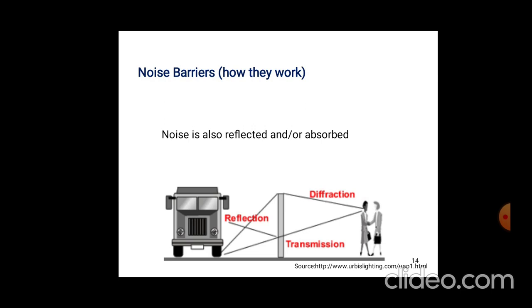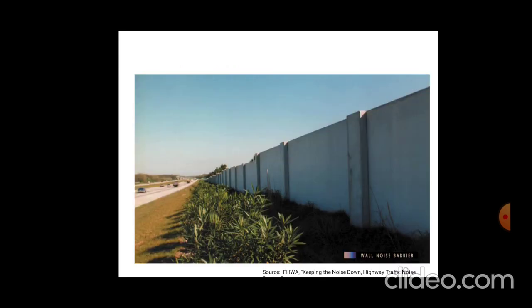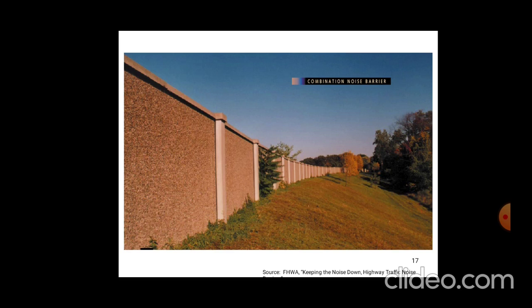This is an example: trucks and two men talking, with a barrier provided. After reflection and absorption, noise will be less. This is the wall noise barrier provided to reduce noise. This is a combination of noise barriers. This is all about noise control.